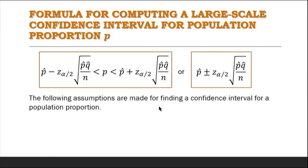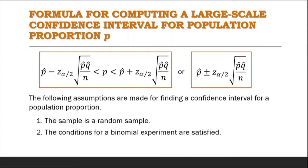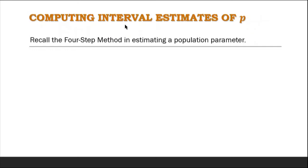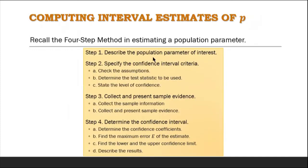The following assumptions are made for finding a confidence interval for the population proportion. First, the sample satisfies the conditions for a binomial experiment. In computing the interval estimates of population proportion p, recall the four-step method. Step 1: Describe the population parameter of interest. Step 2: Specify the confidence interval criteria. Step 3: Collect and present sample evidence. Step 4: Determine the confidence interval.